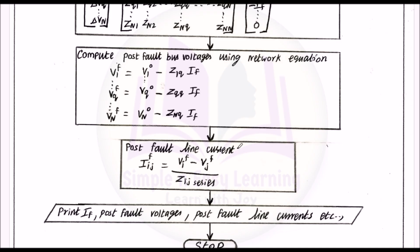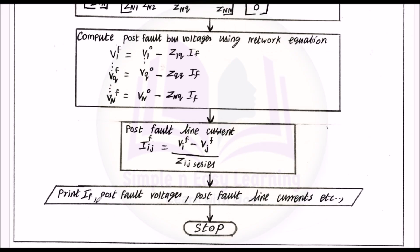Next step: calculate the post-fault line current using the formula Iij = (Vif minus Vjf) divided by Zij series. The values Vif and Vjf are taken directly from the post-fault bus voltages already calculated, and Zij series is taken from the Z bus matrix. Finally, print the fault current, post-fault voltages, post-fault line currents, and stop execution.